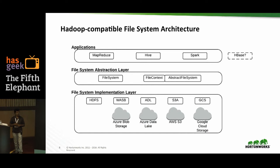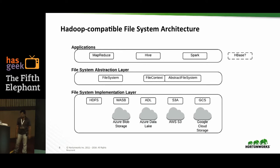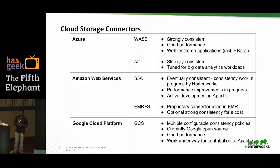This slide covers the Hadoop compatible file system architecture. Applications like MapReduce, Hive, and Spark do not directly talk to file system implementations; instead they go through an abstraction layer of interfaces and abstract classes — FileSystem, FileContext, AbstractFileSystem, and so on. Beneath that are concrete implementations: HDFS and cloud providers such as WASB from Microsoft, ADL (Azure Data Lake) also from Microsoft, S3 from Amazon, and GCS from Google Cloud Storage.